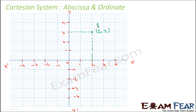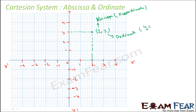This value two is nothing but the abscissa, and three is the ordinate. The abscissa is the x-coordinate. The word 'abscissa' comes from 'abscindere,' meaning 'to cut off.' The abscissa is the perpendicular distance from the y-axis.